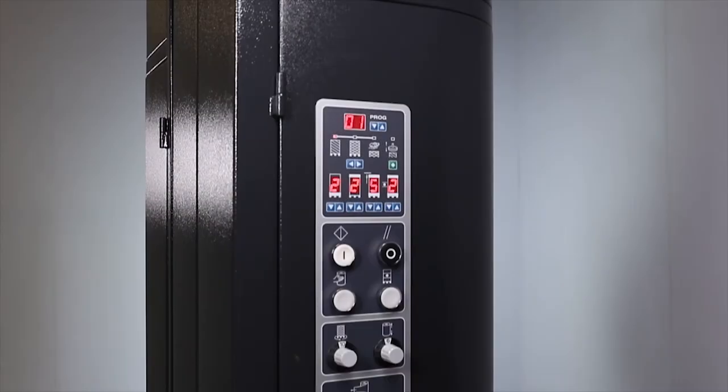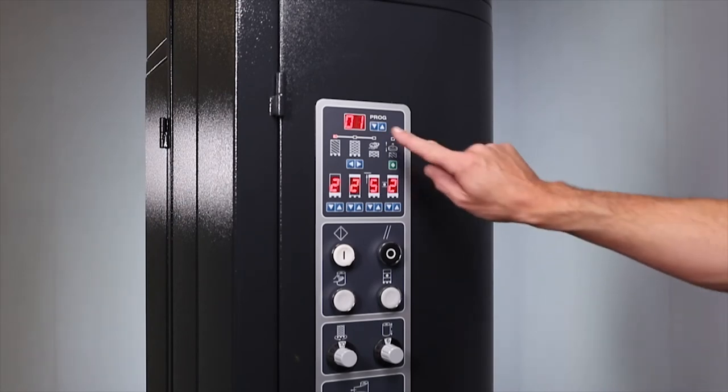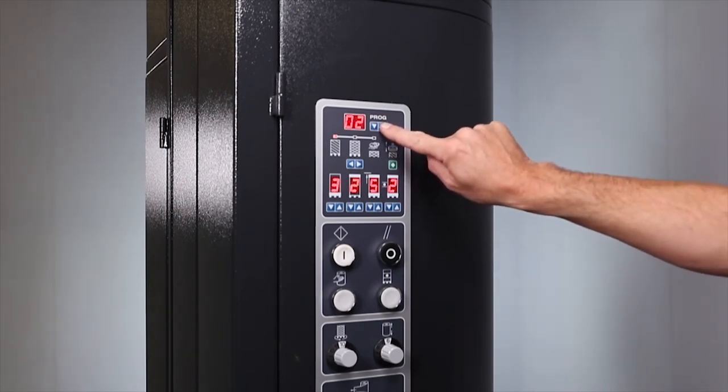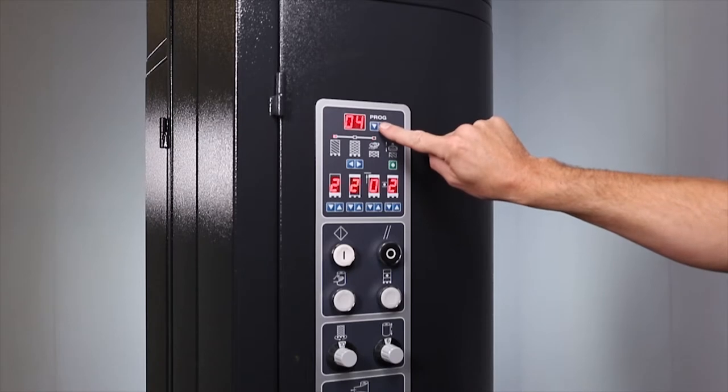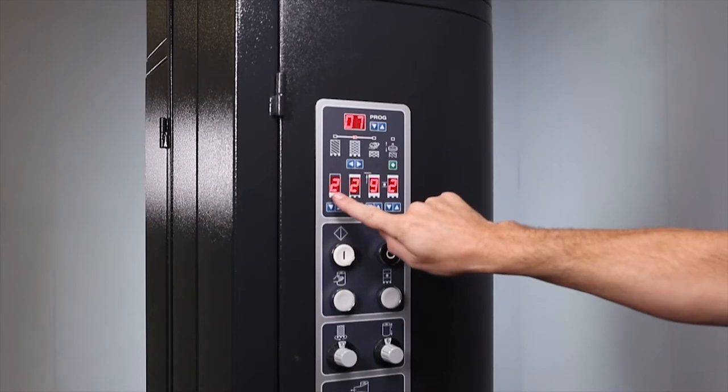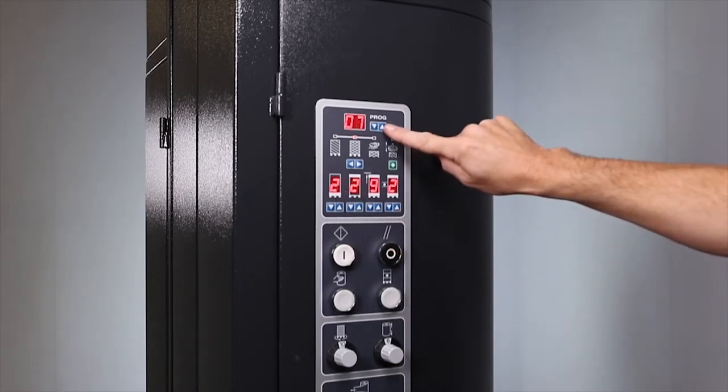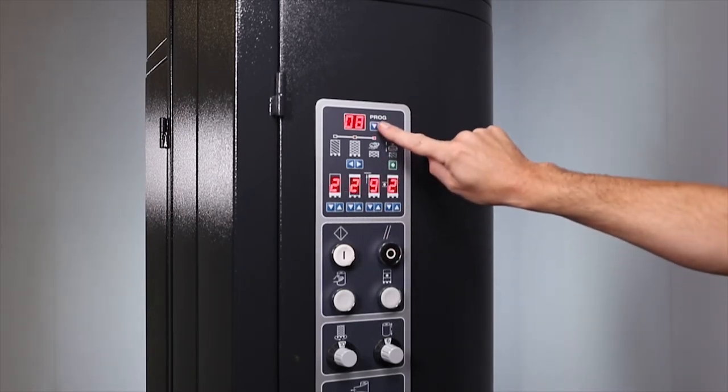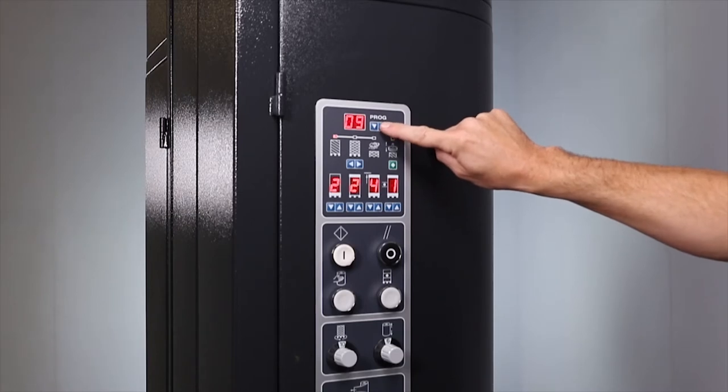The Love Shore Plus control panel has a simple layout. It is easy to choose from pre-programmed wrap patterns. Alternatively, you can create your own in a few seconds. It is possible to select functions such as overlap, turntable speed, and film tension, amongst others.